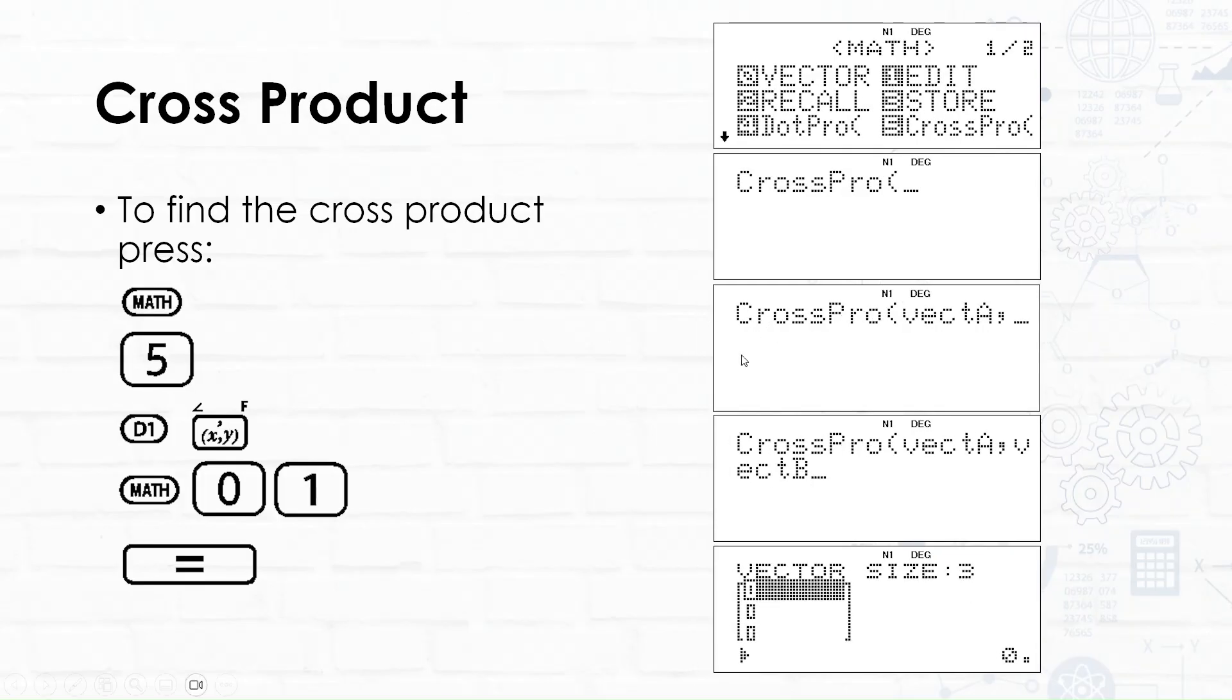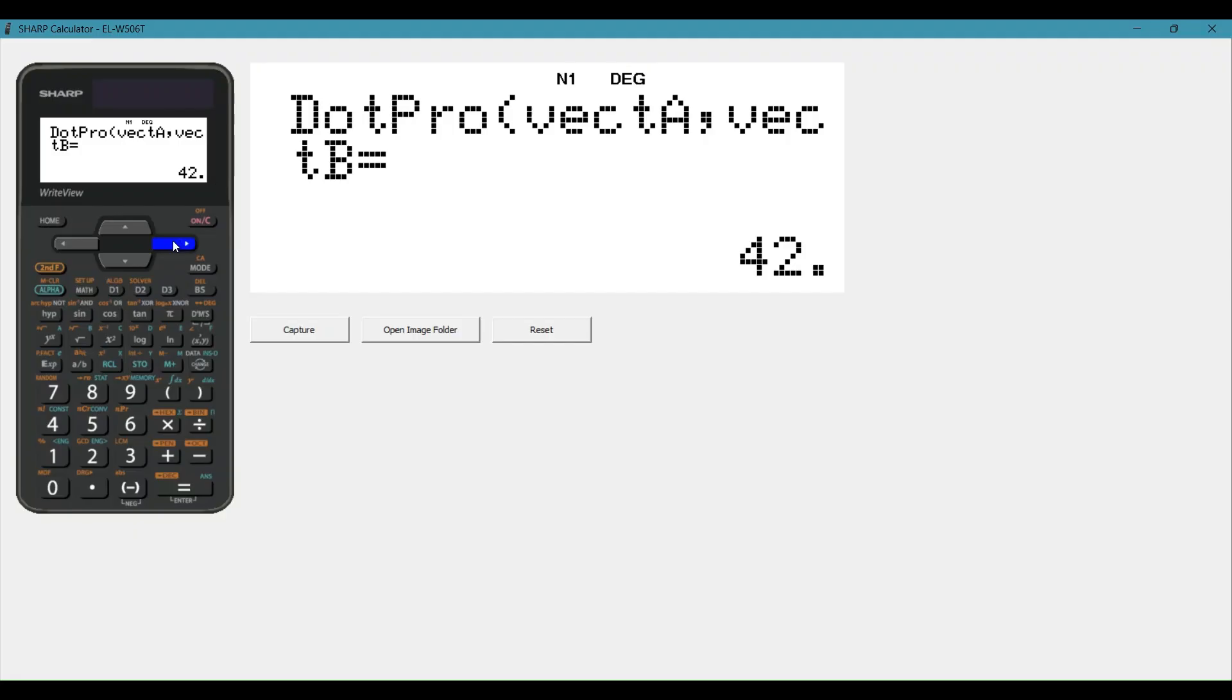We can also do the same sequence of events with a cross product. Now because vector B is a scalar, or scaled vector of vector A, our cross product is obviously going to be zero. But if you did different values into vector B, it would be different.